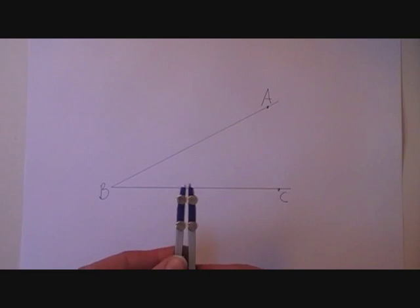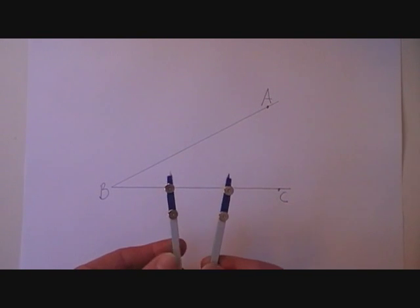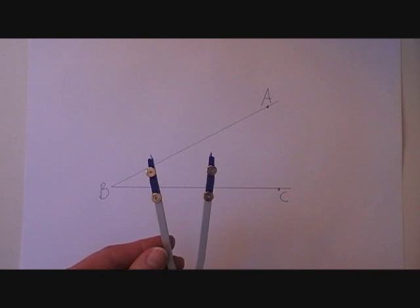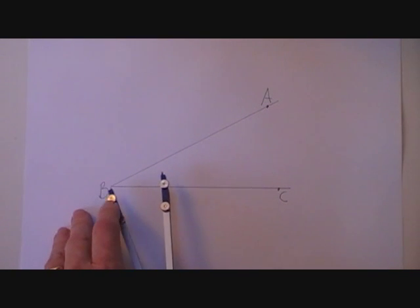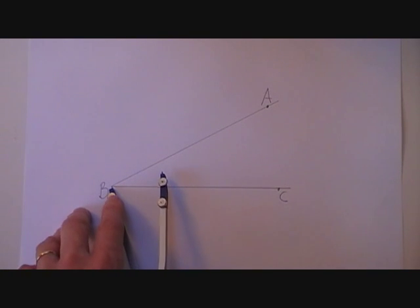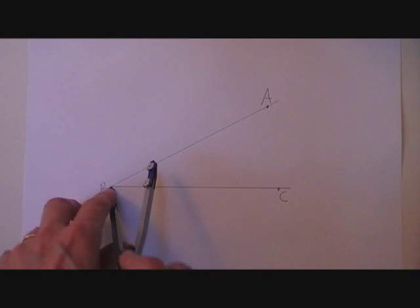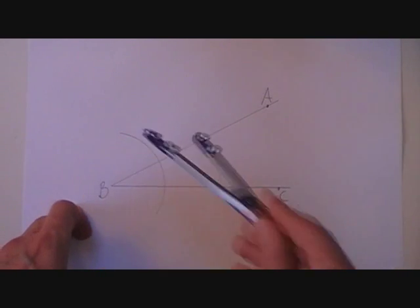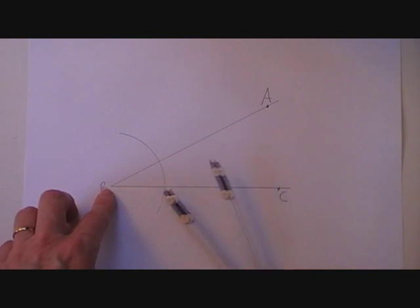I take my compass, I stretch it out and I am going to keep that radius the same all the time that I am doing this construction. I put the point of the compass on B and I spin around and I draw an arc that cuts the two arms of the angle.